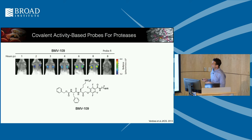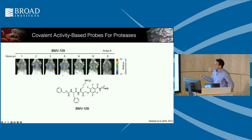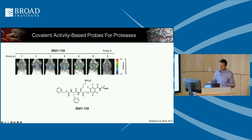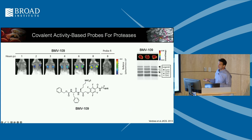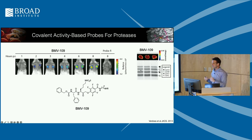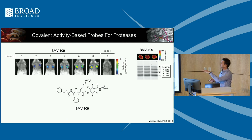We started putting these molecules into mice, optimizing the chemistry for stability. This is a mammary fat pad tumor — two small tumors visible here. Over the course of a few hours you get really nice contrast as the probe lights up in the tumor tissue because of high cathepsin activity. By eight to ten hours you're getting very bright signals specifically in the tumor. Because the probes are covalent, we can take the tumors out, run them on a gel, and actually visualize that same series of cathepsin bands.